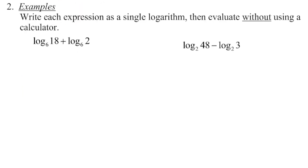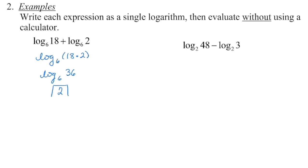All three log laws are on your formula sheet — you don't have to memorize them, but you must use them. We're going to write each expression as a single logarithm and evaluate with no technology. For the first example: there's no whole-number exponent on base 6 giving 18 or 2, but we recognize the same base. Since we're adding two logarithms with the same base, we multiply the arguments: 18 times 2 is 36, and the exponent on base 6 giving 36 is 2.